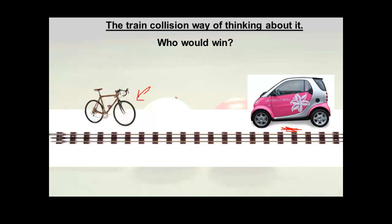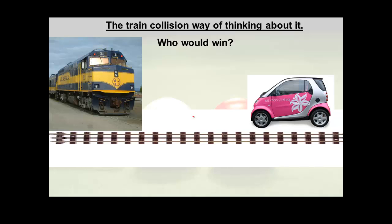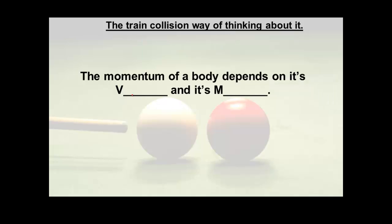Okay maybe a smart car would win, but definitely if I change that to a train the smart car would be toast and crumpled pretty quickly. So it depends on how big it is but also how fast it's going. The science way to say that is it depends on how fast it's going in the direction or the velocity, and how much stuff it's got, which is the mass.